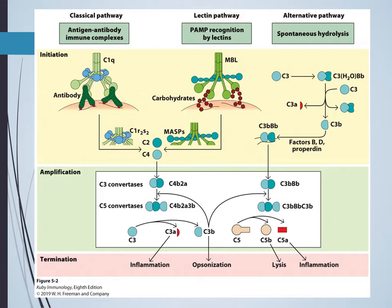The alternative pathway allows response to novel pathogens through spontaneous C3 activation. C3B binds to factor B, which is activated to Bb, forming a C3BBb complex on the membrane that acts as C3 convertase. Another C3 is then activated by this complex, amplifying the response, which can then lead to terminal effects.